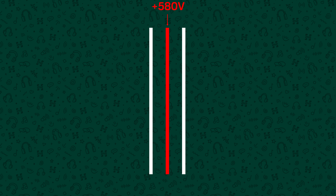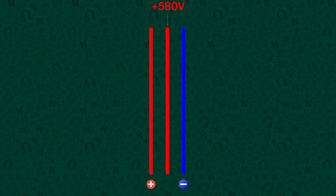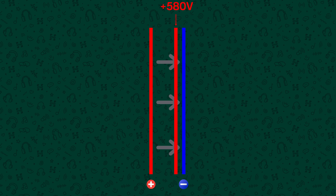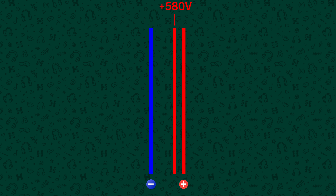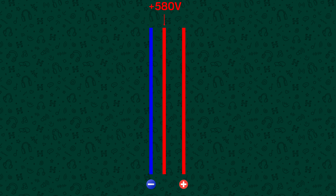Unlike a planar magnetic headphone where the audio signal is passed through the traces on the diaphragm, in an electrostatic headphone the signal is applied to the stators. As the audio signal goes positive, a positive voltage is applied to one stator and an equal but opposite negative voltage is applied to the other stator. Since like charges repel each other and opposite charges attract, the highly positively charged diaphragm is electrostatically repelled from the positive stator and attracted to the negative stator. As the audio signal changes and becomes negative, the signal applied to each stator changes and so the diaphragm is now attracted and repelled in the opposite direction. By altering the voltage applied to each stator you alter the movement of the diaphragm, the diaphragm moves the air and so you make sound.